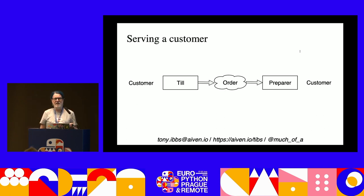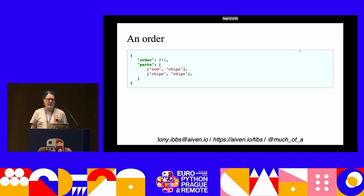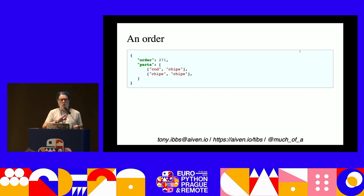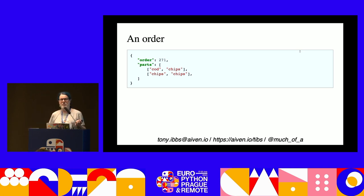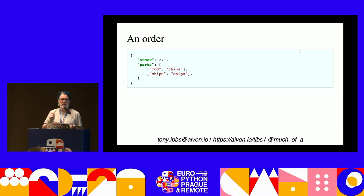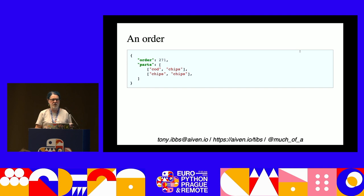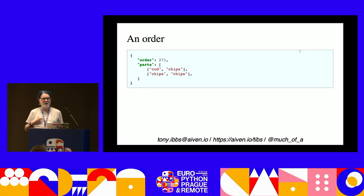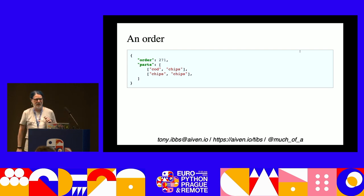How do we represent an order? We'll use JSON. We probably want an order number so we can count orders throughout the day and keep them separate - traditionally you'd be given a slip of paper with a number. And then the components of the order: one person here has ordered one portion of cod and chips, which is very traditional. You can also order just chips, or a large portion represented as chips twice for simplicity.